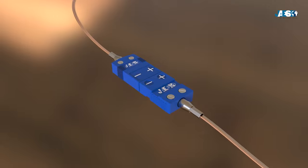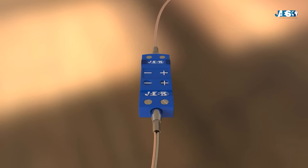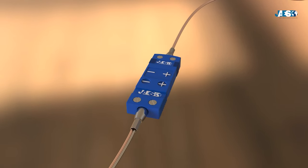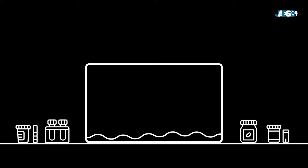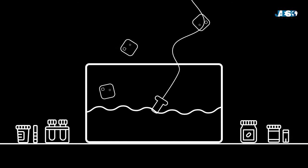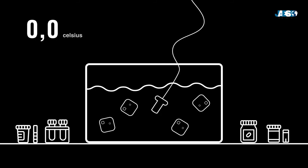For the measurement to be accurate, the cold junction must be in an environment with a known temperature to compare it to that of the hot junction. Ideally, in the laboratory, the cold junction was immersed inside a liquid solution of water and ice, therefore at a constant temperature of zero Celsius.